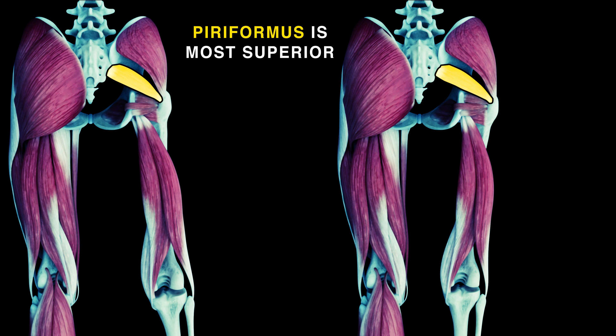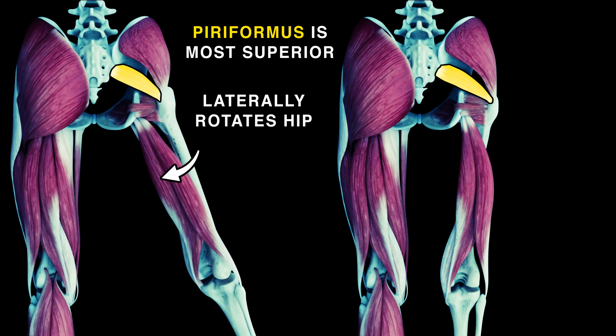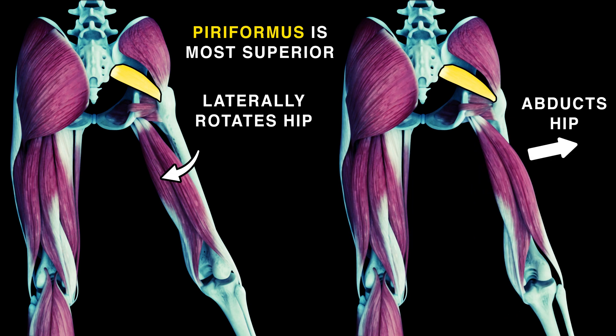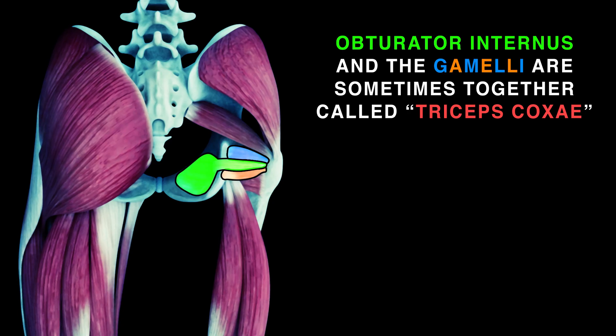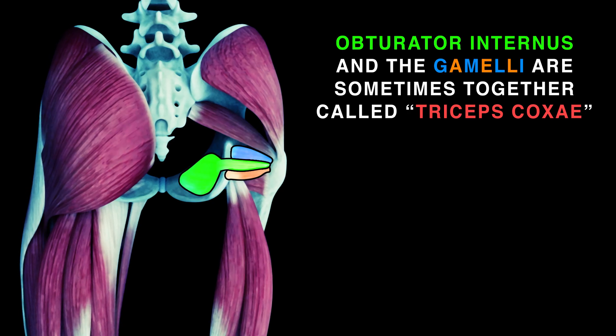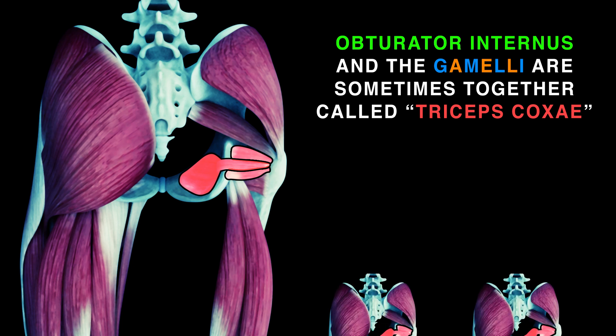The piriformis is most superior and laterally rotates the hip. This flat muscle also causes abduction of the hip. Obturator internus and gameli are called the triceps coxae. They act on the hip.